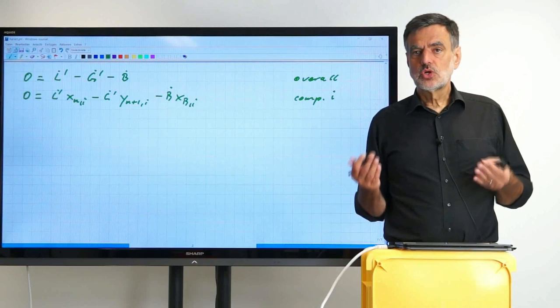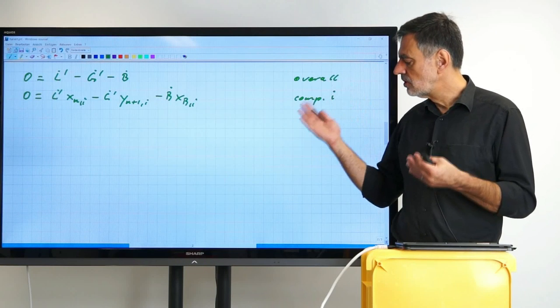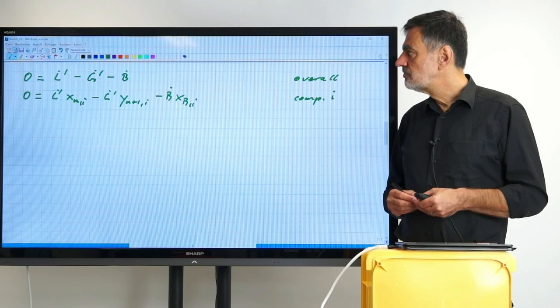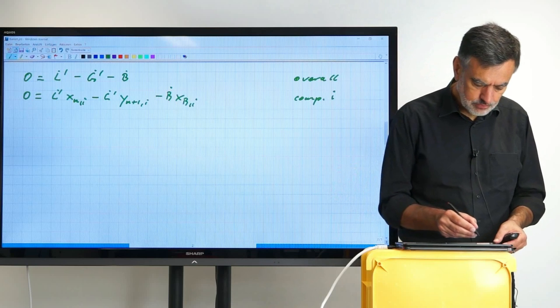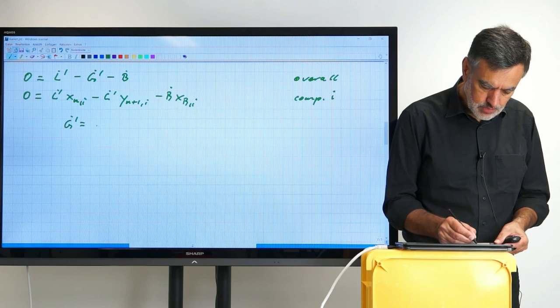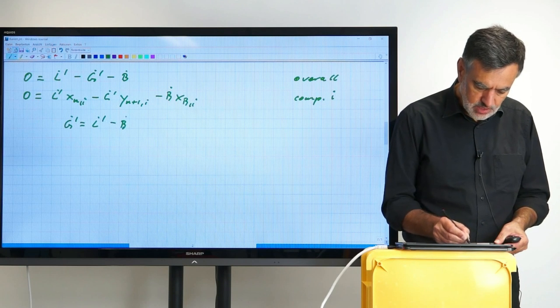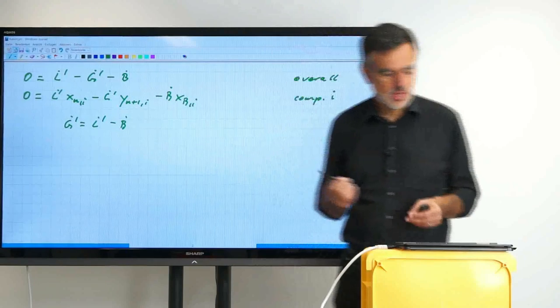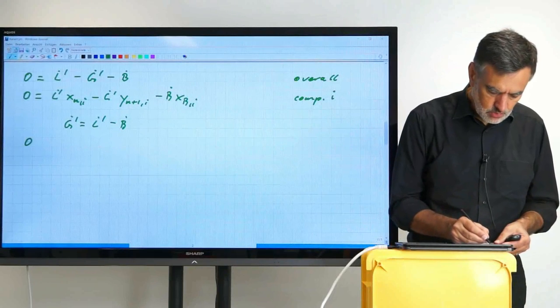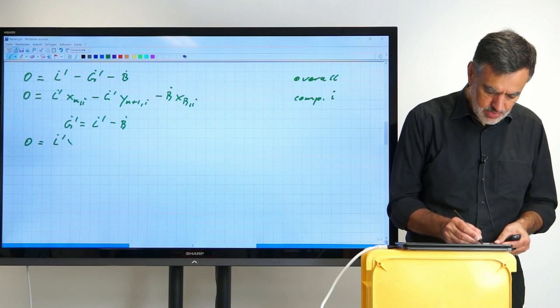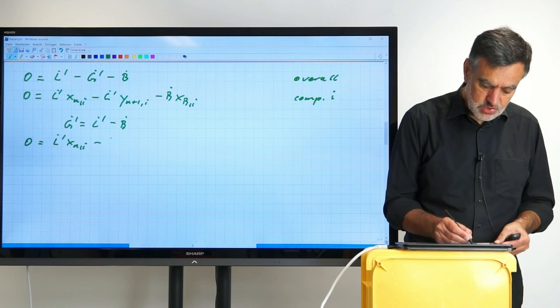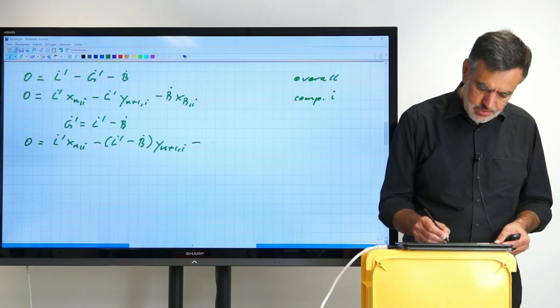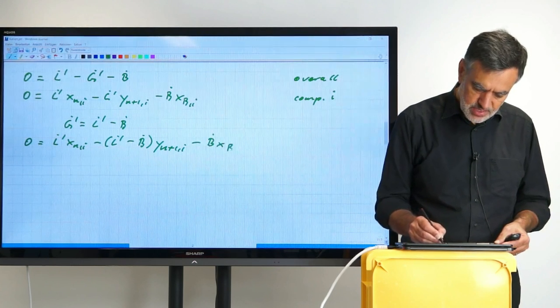Now with these two equations, we do what we always do. We take the first equation, solve that for one variable, plug it into the second equation and see what we wind up with. The first equation, we solve it for the G dot prime. So we can say G dot prime equals L dot prime minus B dot, and we substitute this in the equation above. So zero equals L dot prime X_Ni minus (L dot prime minus B dot) in brackets times the Y_N+1,i minus B dot times X_Bi.